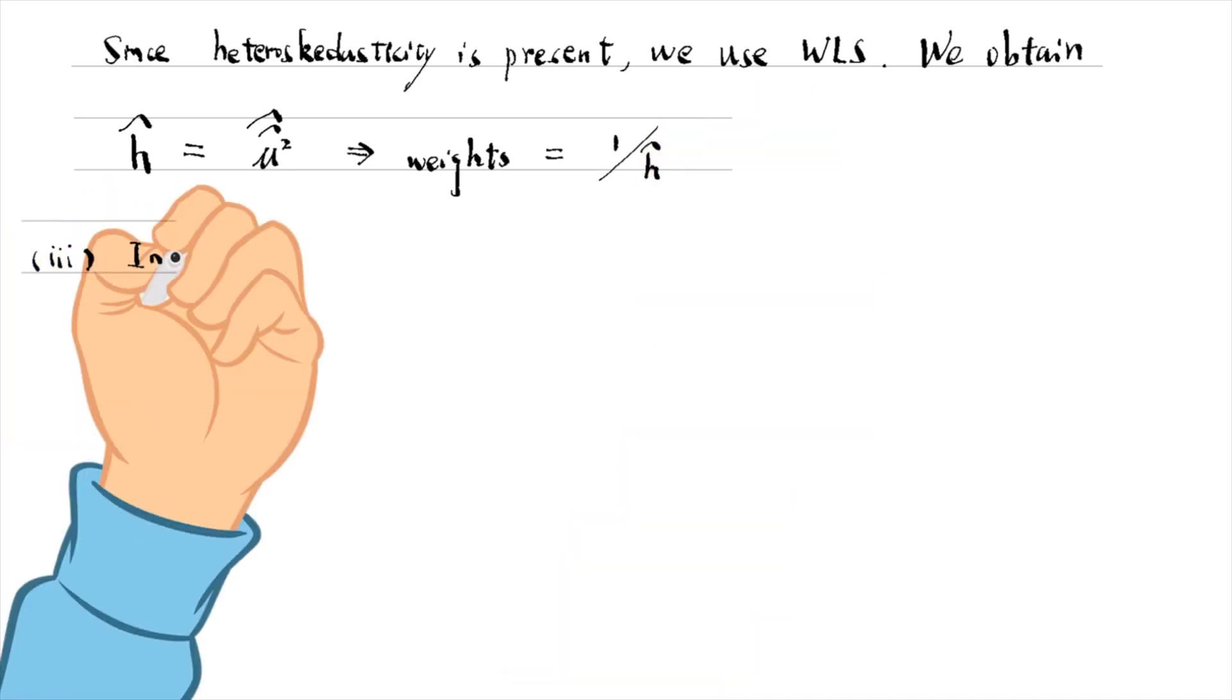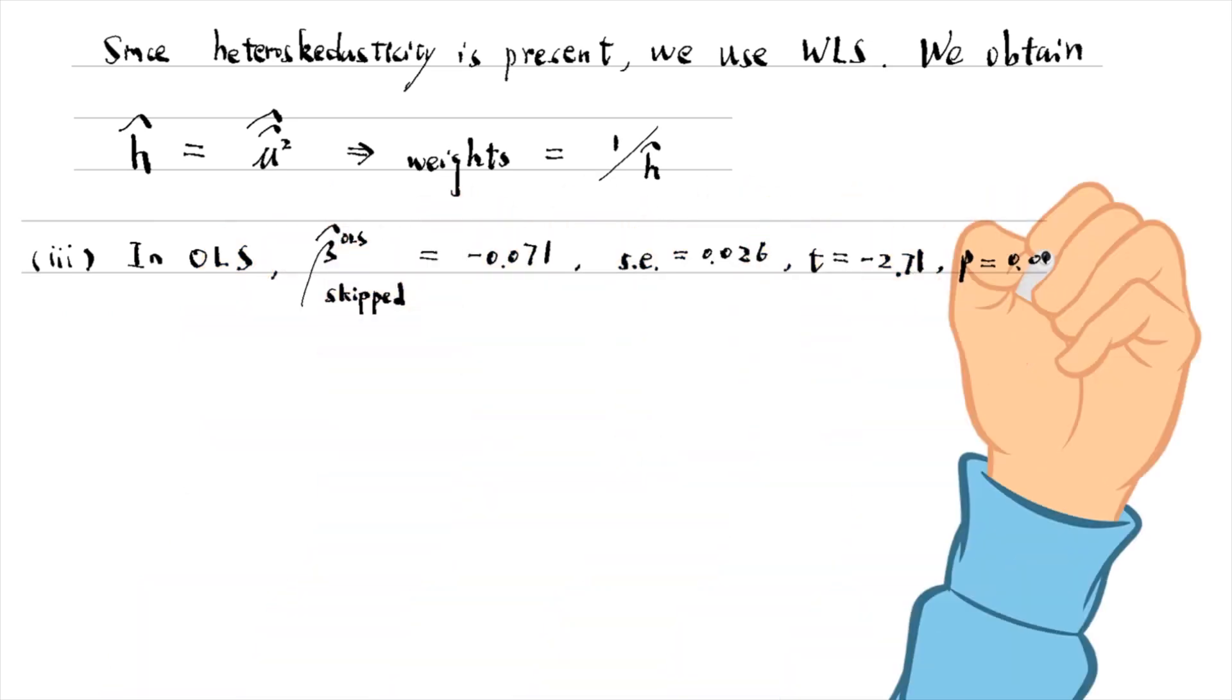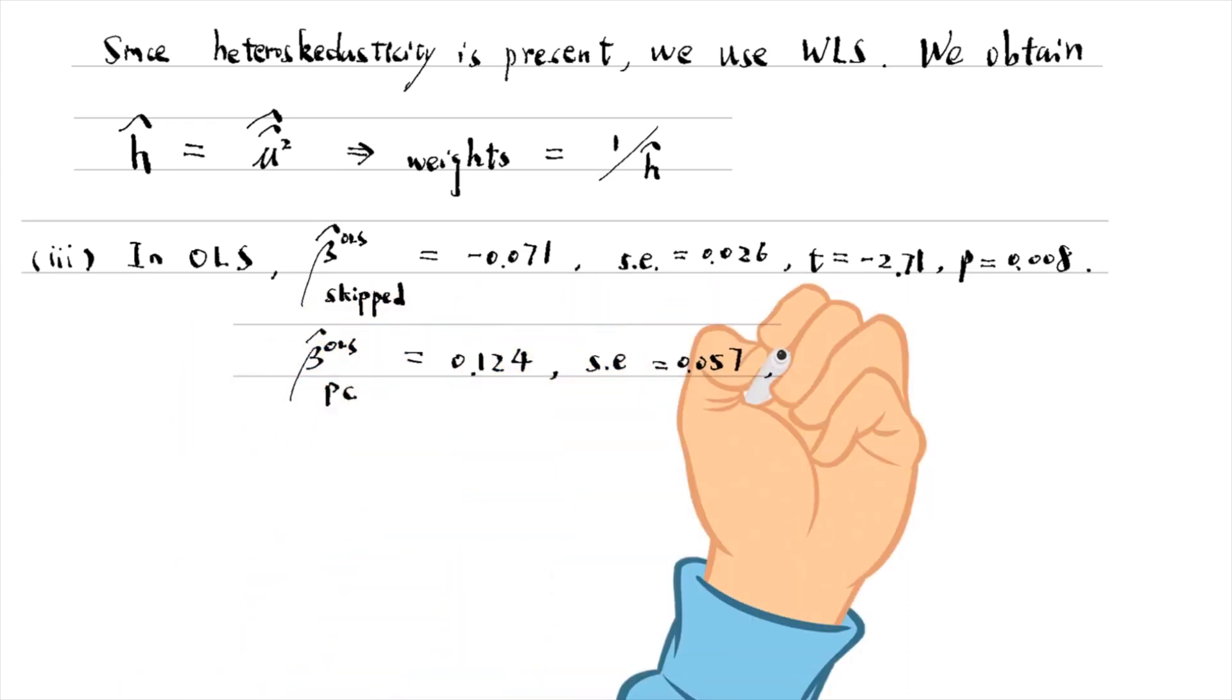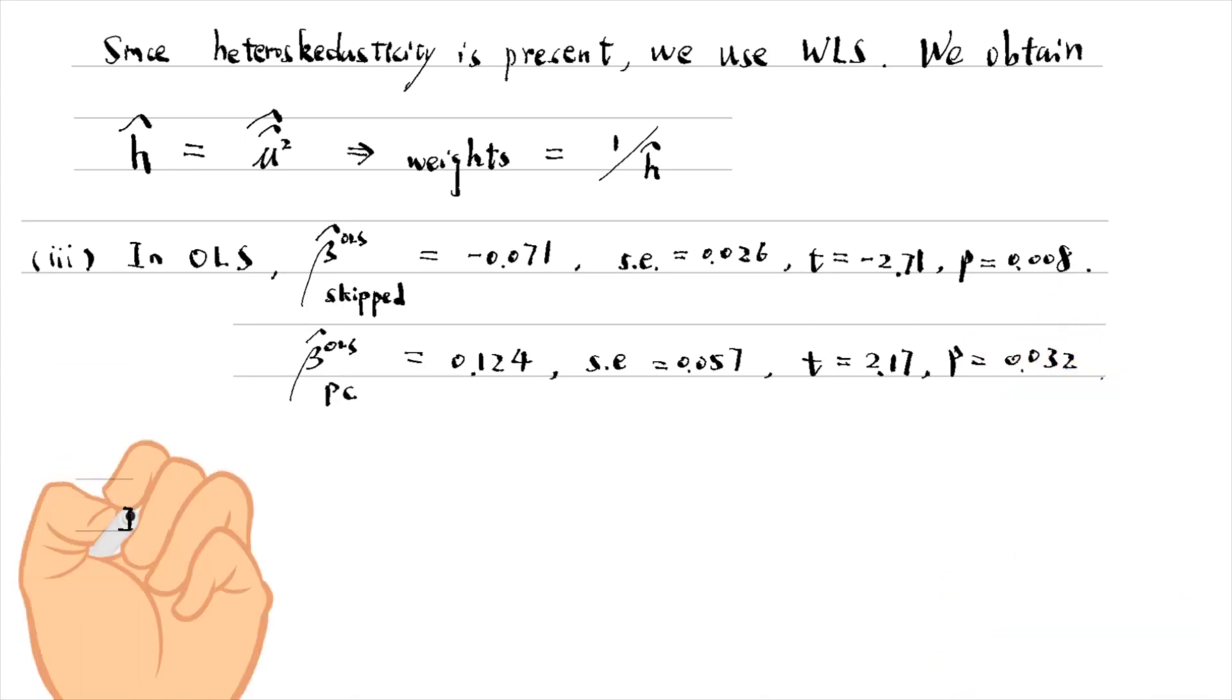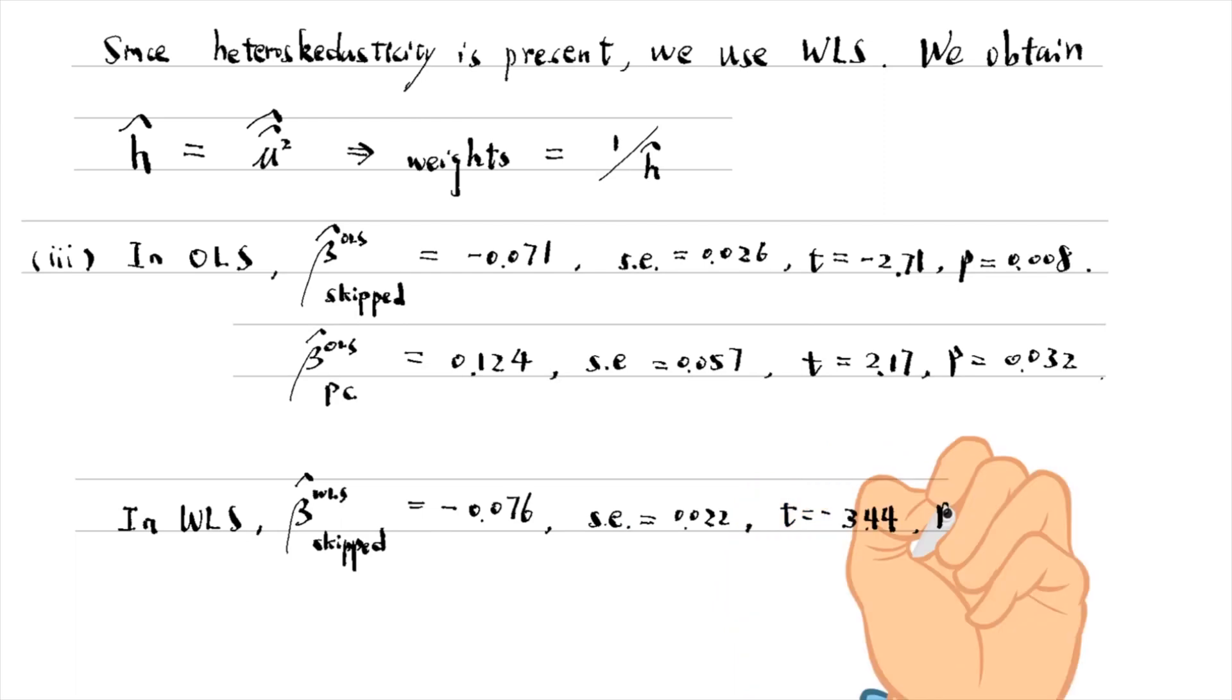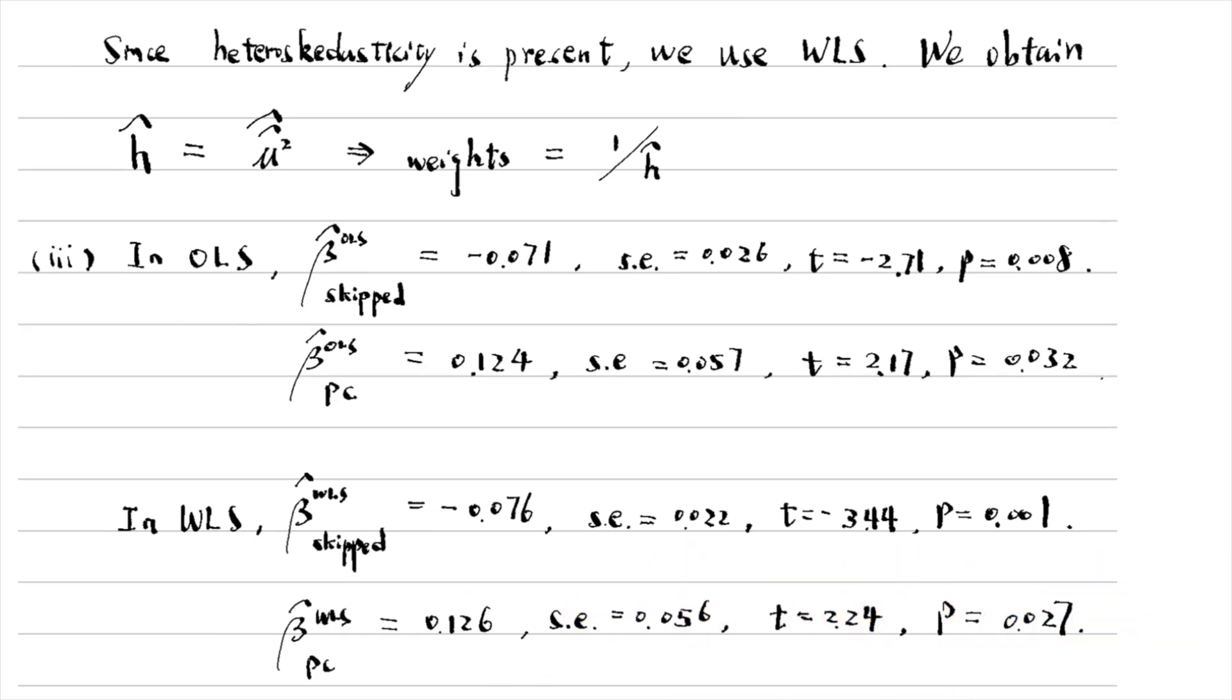Comparing weighted least squares with ordinary least squares, we find that the estimates are similar. In the weighted least squares, the effects of skipping lectures and having a PC are slightly larger. The standard errors are slightly smaller, leading to larger t-statistics in absolute values and smaller p-values.